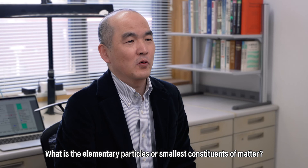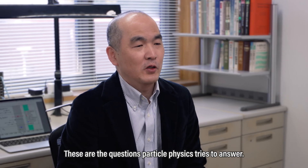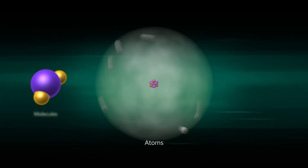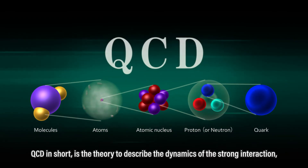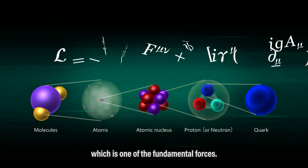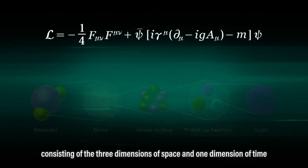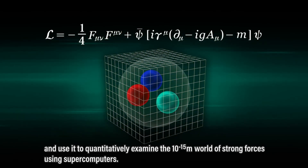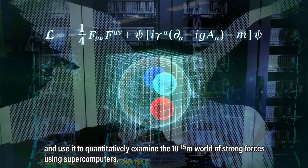What are the elementary particles or smallest constituents of matter? What are the most fundamental interactions? These are the questions particle physics tries to answer. Quantum chromodynamics, or QCD, is the theory describing the dynamics of the strong interaction, one of the fundamental forces. We define QCD on a discretized lattice of four-dimensional space-time, consisting of three dimensions of space and one dimension of time, and use it to quantitatively examine the 10⁻¹⁵ meter world of strong forces using supercomputers.